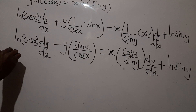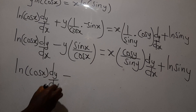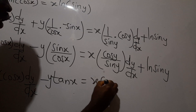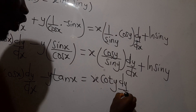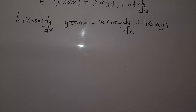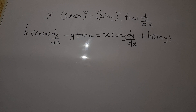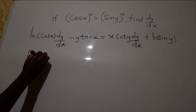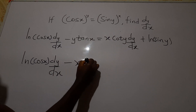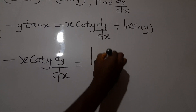So we can write: ln(cos x)·dy/dx minus y·tan x = x·cot y·dy/dx plus ln(sin y). From here, we group the terms with dy/dx on one side: ln(cos x)·dy/dx minus x·cot y·dy/dx, then factor out dy/dx.